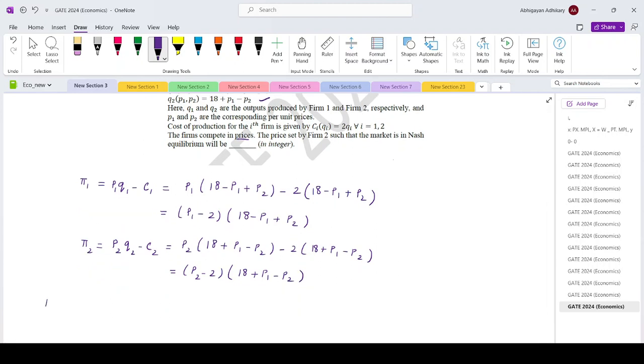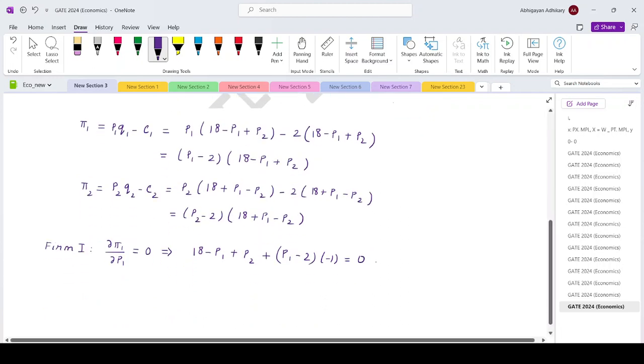So for firm 1, we will differentiate pi 1 with respect to P1 and set it equal to 0. So that is 18 minus P1 plus P2 plus P1 minus 2 into minus 1 equals 0. This is your equation 1.